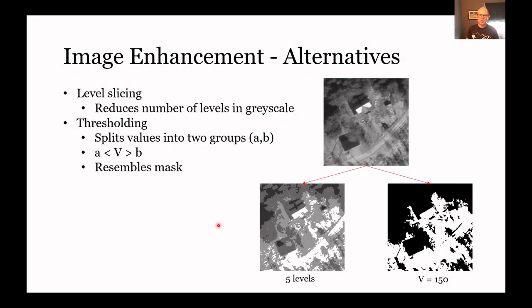Another method of enhancement in this category is level slicing, where we look through the data and start chopping it up. All values below a certain threshold get one particular gray value, anything above that and between another value gets another gray value. We're just classing the data essentially.